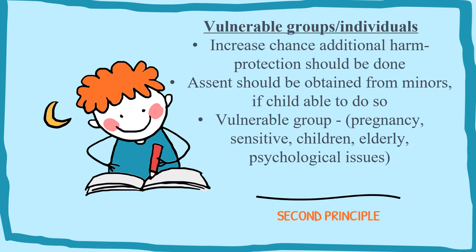The second principle concerns vulnerable groups or individuals. Vulnerable groups include pregnant women, sensitive individuals, children, the elderly, and those with psychological issues. Because they have an increased chance of harm, additional protection must be provided. It is very restrictive to do research on vulnerable groups. If you do want to conduct research on them, extra care must be taken. Assent should be obtained from minors if the child is able to give it.